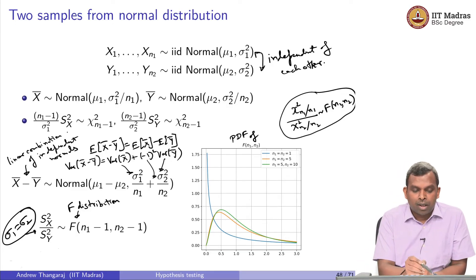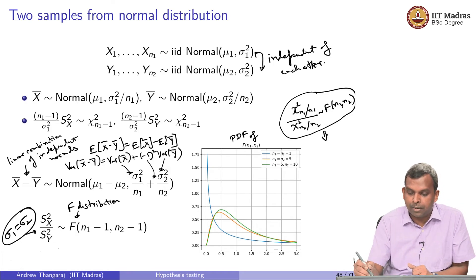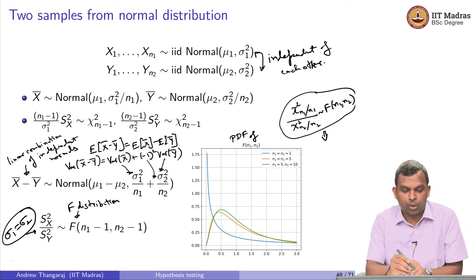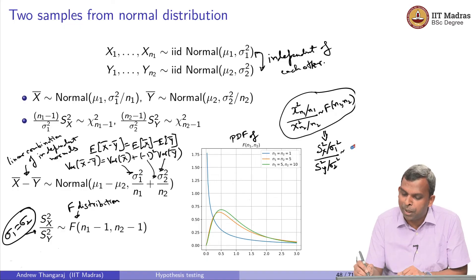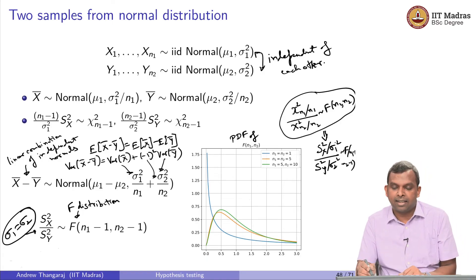Once given this result, if you notice here actually from this, this implies Sx²/σ1² divided by Sy²/σ2² is actually F(n1, n2). So n1 minus 1, it is F(n1-1, n2-1). This is the result. You will get Sx²/σ1² divided by Sy²/σ2² is F(n1-1, n2-1). This is a general result.